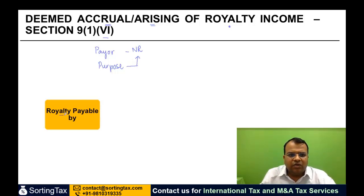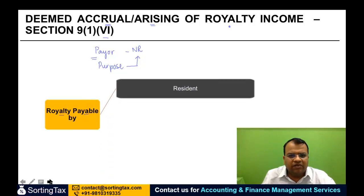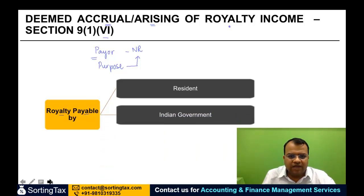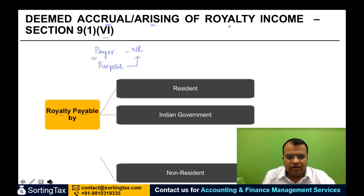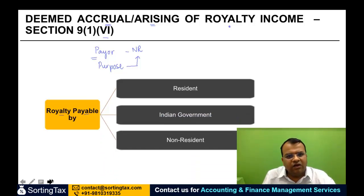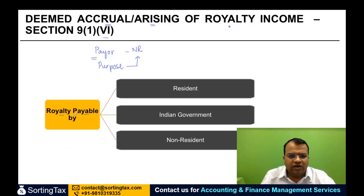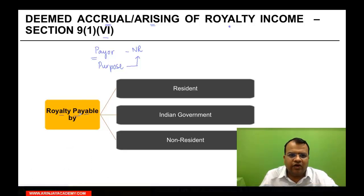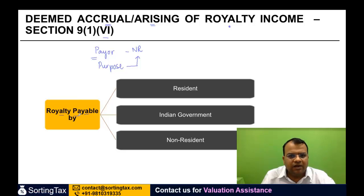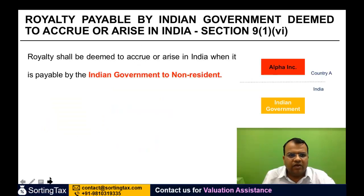Now, royalty can be payable by three categories of payers. One, a person who is a tax resident of India. Second, the Indian government. And third, a non-resident. In each of these three cases, there are different rules as to when the royalty would be deemed to accrue or arise in India. Let us look at them one by one.